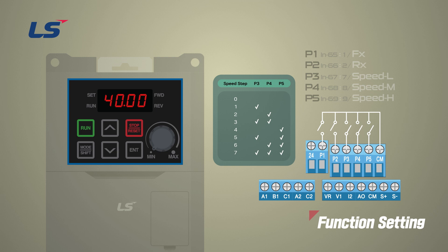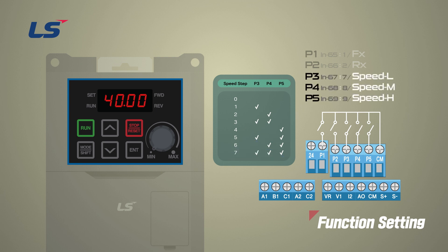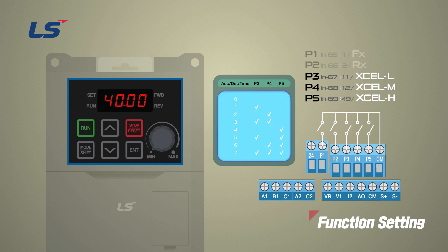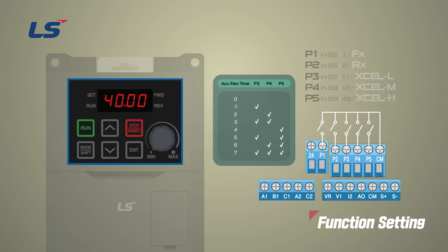The multi-speed is determined depending on the input status of each terminal, and third, fifth, sixth, and seventh speeds can be achieved through a combination of terminals P3, P4, and P5. Multi-stage acceleration-deceleration also operates in the same sequence, and stages one to seven can be used depending on the input signals of XLL, XLM, and XLH.